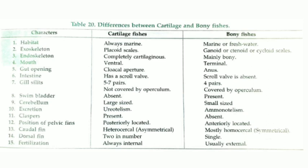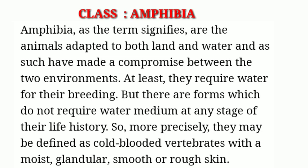A very important question is: what is the difference between cartilaginous fishes and bony fishes? Regarding habitat: cartilaginous fishes are always marine, whereas bony fishes can be marine or freshwater. Exoskeleton is made up of placoid scales in cartilaginous fishes, and ganoid, ctenoid, or cycloid scales in bony fishes. You can note down the other differences from the table in your notebooks — it is a very important question from the examination point of view.